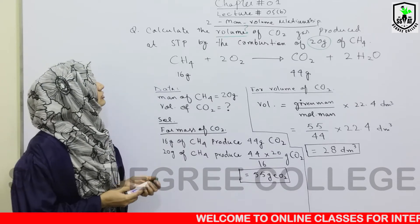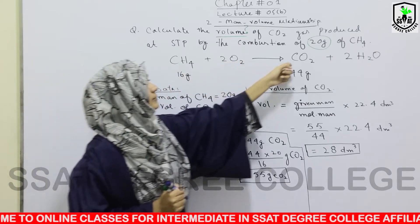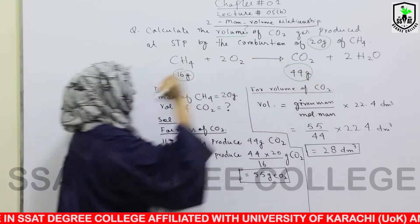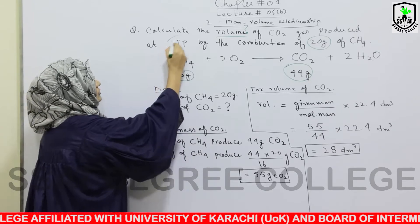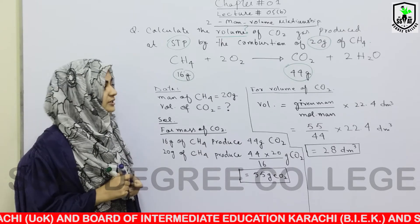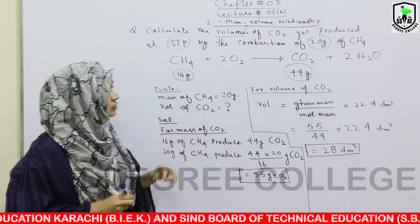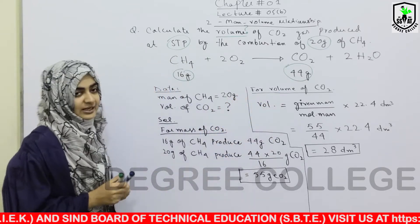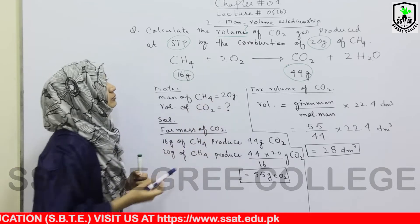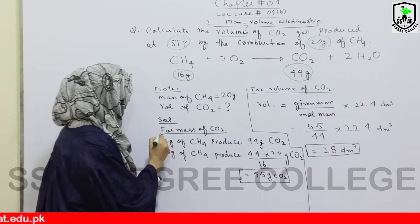चलें इसको देखते हैं किस तरीके से solve हो रहा है। यहाँ एक term STP use की है — STP का मतलब है standard temperature and pressure। फिलहाल हम mass से mass calculate करते हैं। Data: mass of methane 20 grams given है, volume of carbon dioxide calculate करना है। तो solve करते हैं for mass of carbon dioxide।